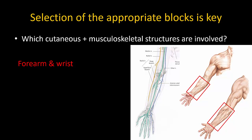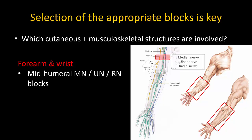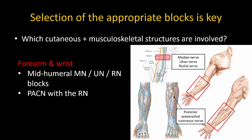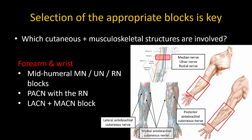For surgery of the forearm and wrist, I recommend blocking the median, ulnar, and radial nerve at the mid-humeral level to ensure that muscles and bony structures are anesthetized. The radial nerve must be blocked proximal to the takeoff of the posterior antebrachial cutaneous nerve, or this nerve can also be blocked separately. The lateral antebrachial cutaneous nerve and medial antebrachial cutaneous nerve must also be blocked to cover the skin of the forearm.